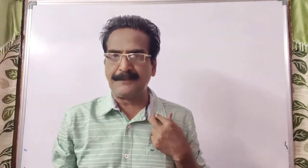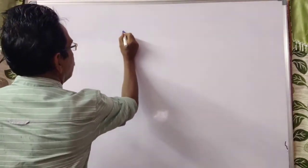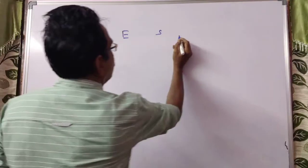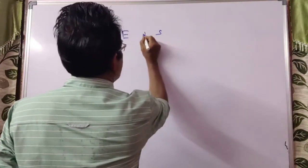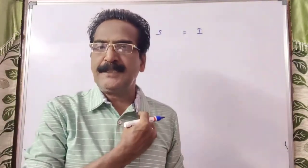The ratio of expenditure and savings is 3 is to 2. The problem is given in the description box, so first read the problem and then watch the video. Expenditure plus savings is equal to income — that we know. So expenditure and savings are in the ratio 3 is to 2.